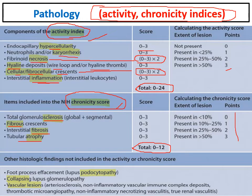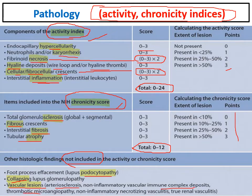If a patient has a high chronicity score with severe interstitial fibrosis and tubular atrophy, I should think carefully before intensifying the immunosuppression protocol. Some histological findings are not included in the activity and chronicity score, including lupus podocytopathy, collapsing lupus glomerulopathy, vascular lesions, arteriosclerosis, vascular immune deposits, and TMA — but these should be taken into account in the management protocol.